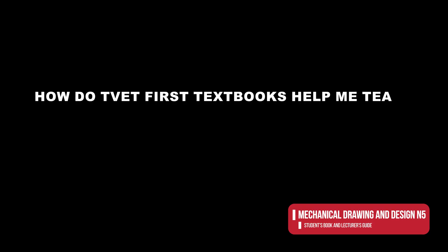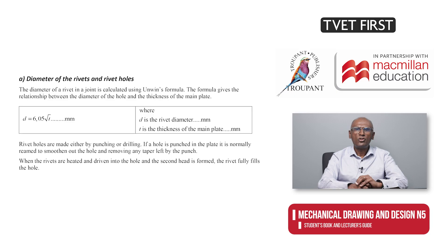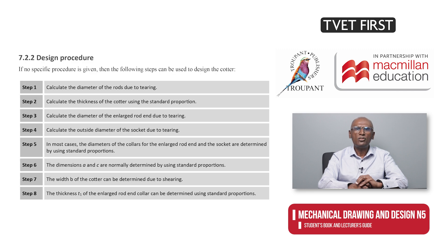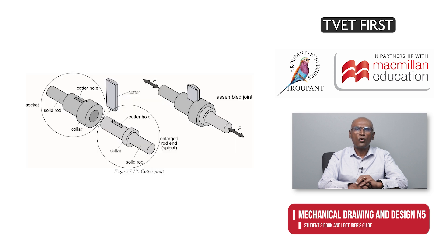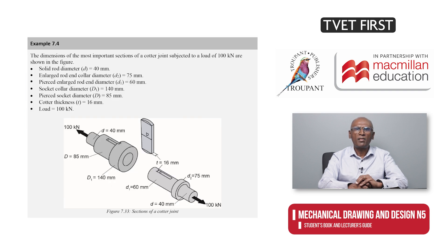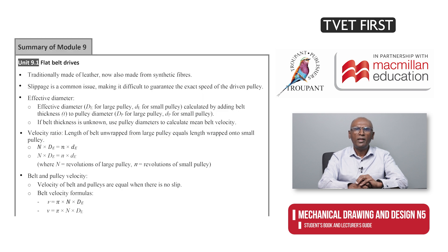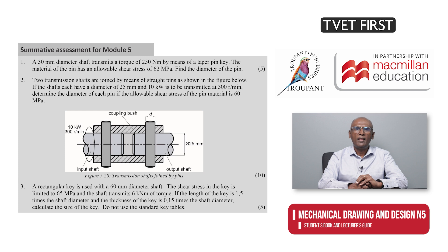How do TVET First textbooks help me teach the new curriculum to my students? The TVET First Mechanical Drawing and Design N5 series includes a student's book and a lecturer's guide. The student's book comes packed with features that prepare students for exam success. Students learn the fundamental principles of mechanical design in clear and concise explanations and easy-to-understand language. Complex designs are broken down into easy-to-follow steps. The 2D and 3D drawings clearly illustrate complicated machine components. Students hone their skills with a variety of examples and exercises. Each module ends with a summary that students can use to check their understanding when revising for exams. Exam-style questions in summative assessments ensure that students are well prepared for tests and exams.